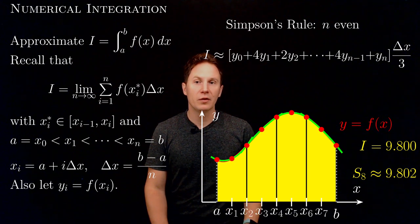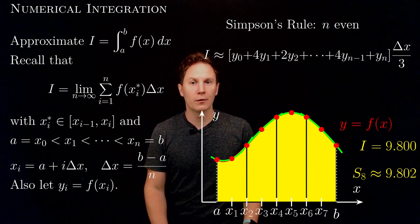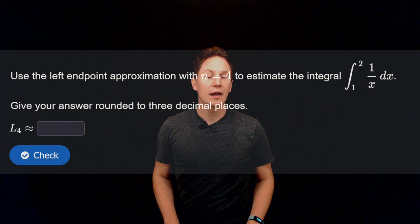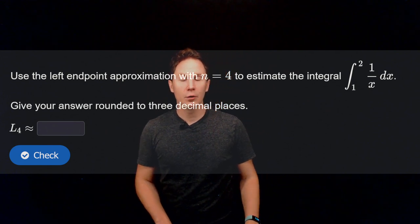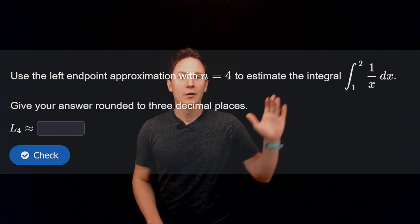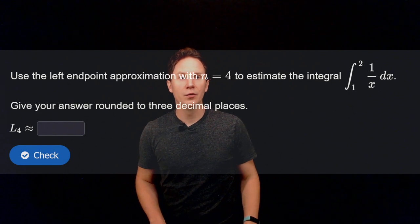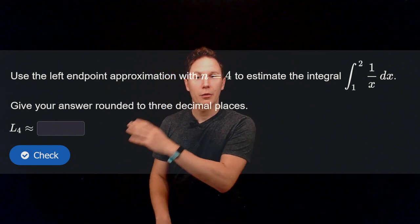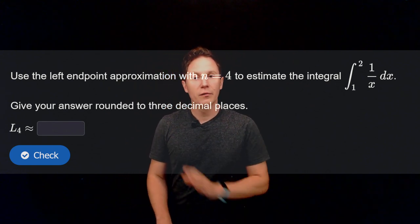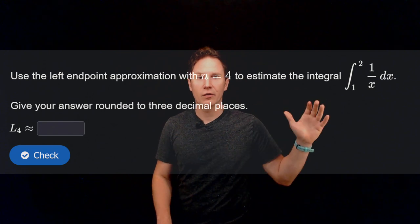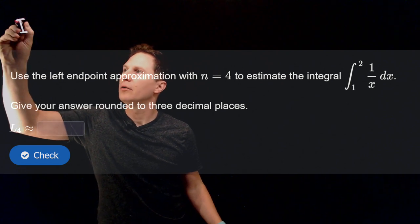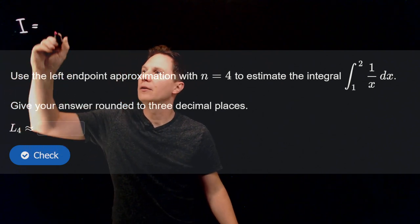Now that we have seen numerical integration and the various rules and methods, let's apply them to an example. Use the left-hand point approximation with n equals 4 — that is 4 subintervals — to estimate the integral from 1 to 2 of 1 over x dx. Give your answer rounded to three decimal places. Before you calculate, let's just set this up.